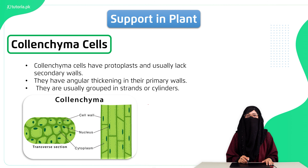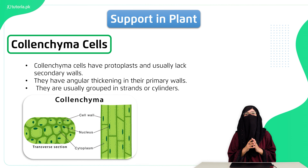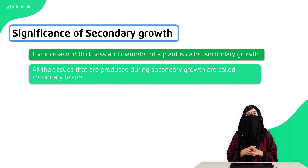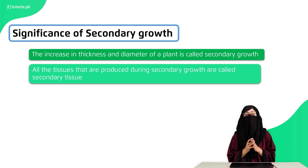The other tissue we have is collenchyma cells. These are basically living cells found in young plants which have roots, stems, or petioles. These cells provide support to plants. Then we will talk about secondary growth. Secondary growth is related to the width and size of plants — as the width and size increase, plants provide more support, because this is a woody stem.